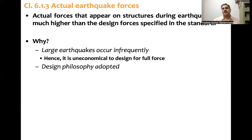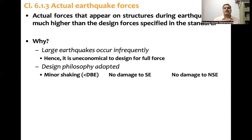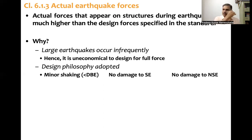The design philosophy adopted by the code specifies three kinds of earthquakes. The first is minor shaking, which is less than the Design Basis Earthquake (DBE). The Design Basis Earthquake is defined as the maximum earthquake that can surely occur at least once in the design life of the building. For minor shaking, no damage should occur to structural or non-structural elements — the structure should be completely safe.